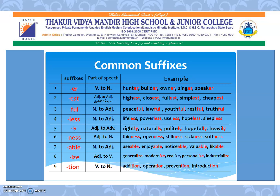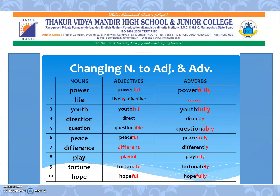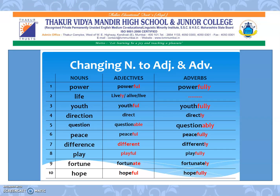The suffix TION changes verbs to nouns: addition, operation, prevention, introduction. We can also see how suffixes change nouns to adjectives and adverbs: power/powerful/powerfully, youth/youthful/youthfully, direction/direct/directly, question/questionable/questionably, peace/peaceful/peacefully, difference/different/differently, play/playful/playfully, fortune/fortunate/fortunately, hope/hopeful/hopefully.